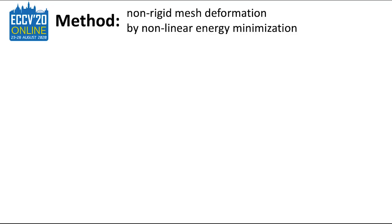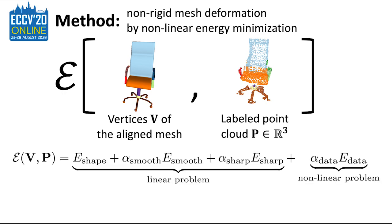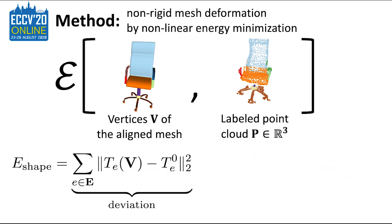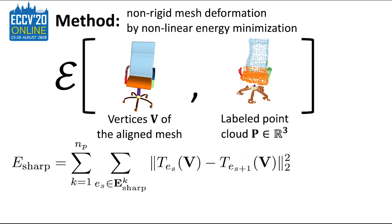Our key contribution is a new deformation formulation aiming to change the shape of the aligned meshes by optimizing a deformation energy. The energy takes as input the aligned mesh vertices and the matching point cloud extracted from a scene. It includes a linear and a non-linear part. The linear constraint terms are designed to penalize deviation from the original shape, maintain continuity and deformation smoothness, and preserve perceptually important linear geometric features of the mesh.